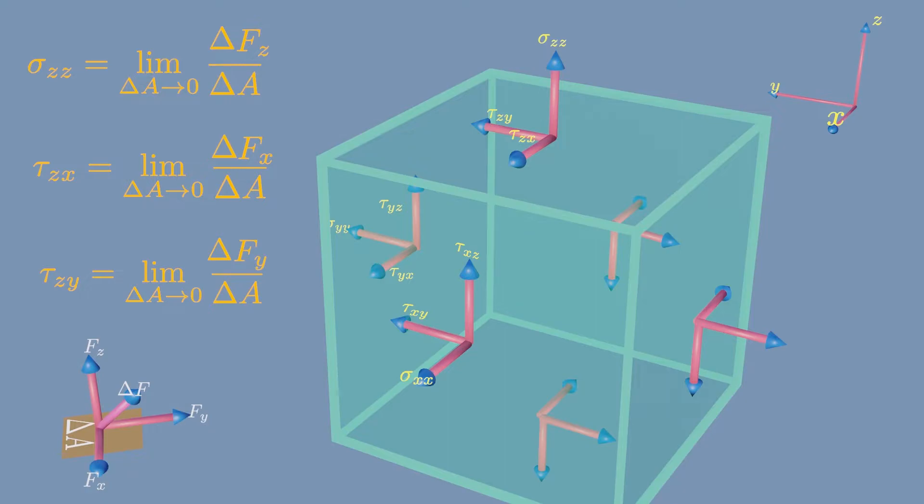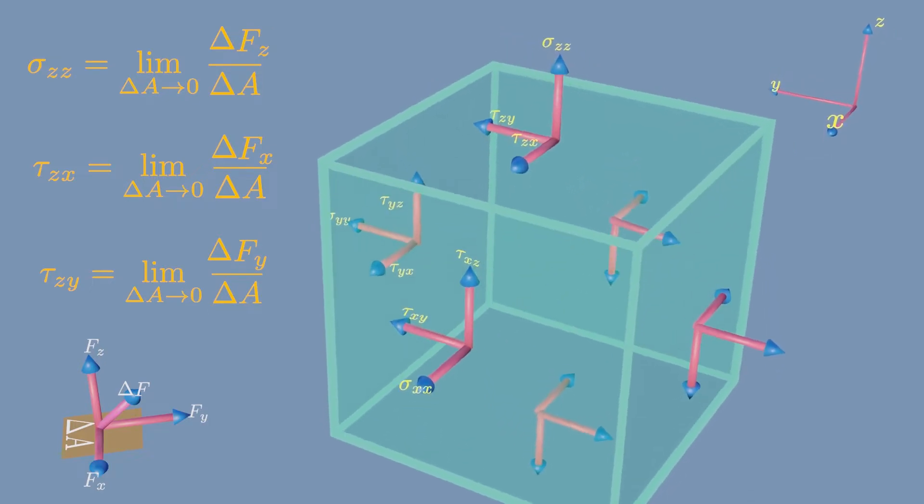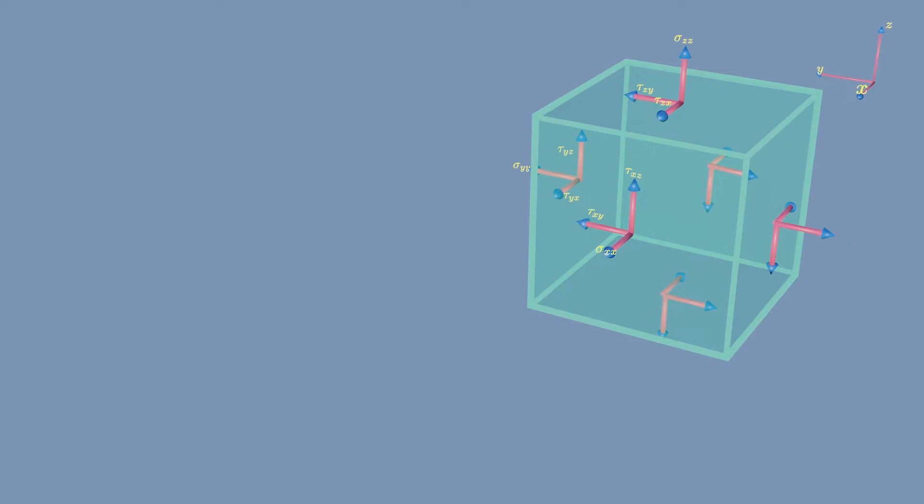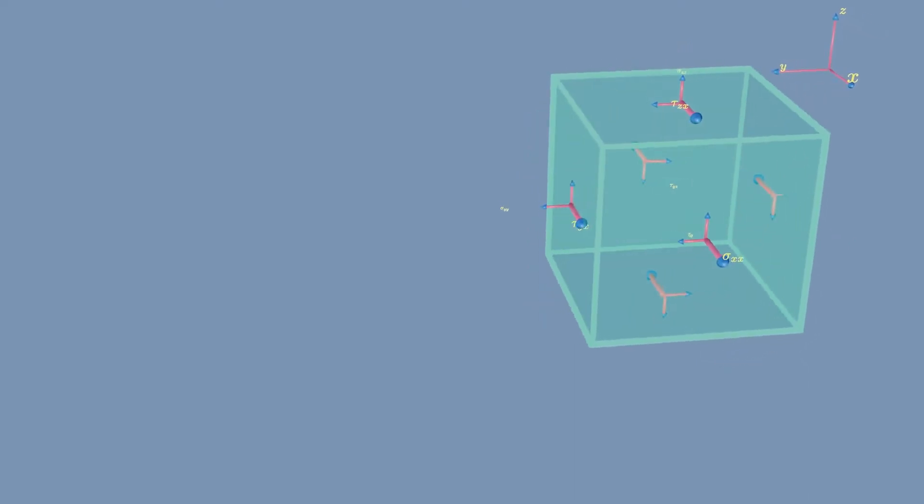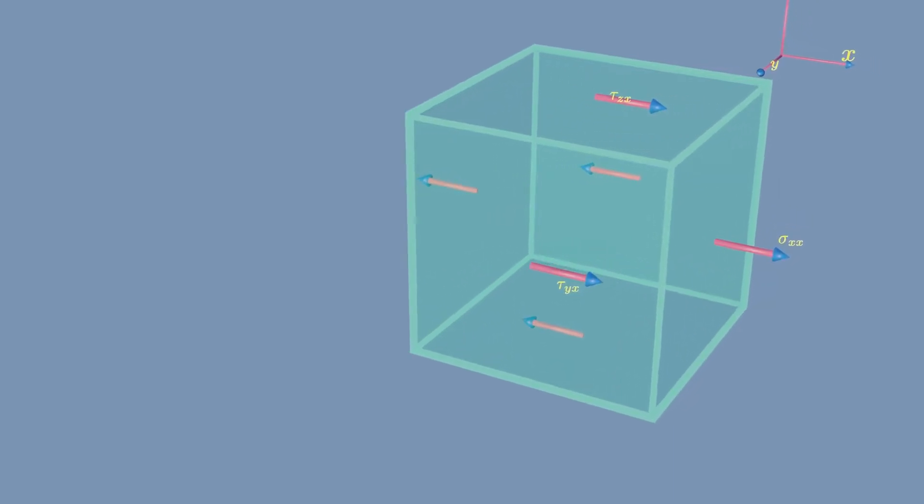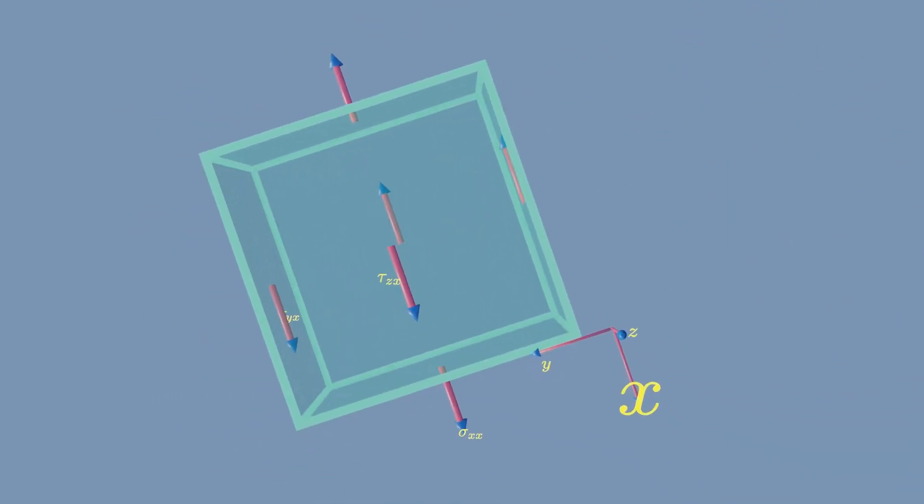For example, consider the free-body diagram of the fluid particle. These arrows are the stress components that act. Now take the stress components that act in X direction only. These are force arrows created by stresses, and they act on X direction.